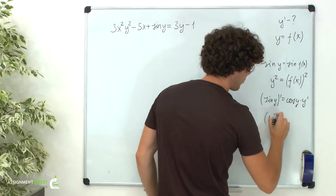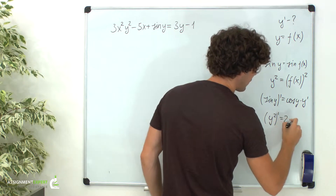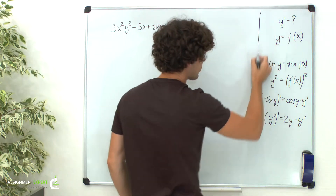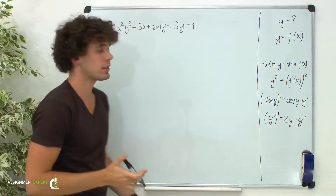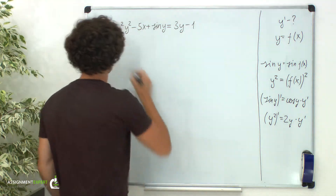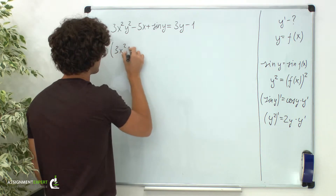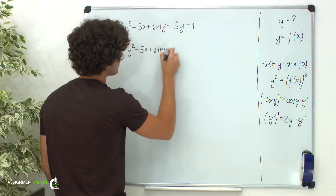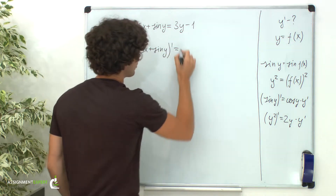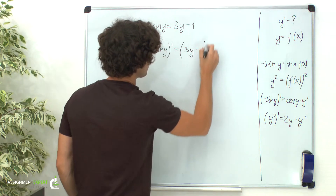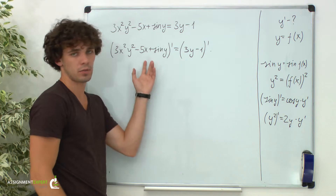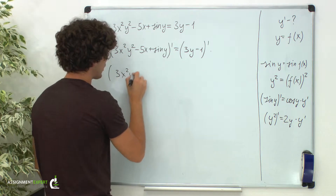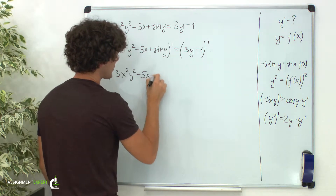And y squared prime is 2y — the derivative of a squared function — times y prime. Now let's differentiate our equality. The derivative of 3x squared times y squared minus 5x plus sine of y equals the derivative of 3y minus 1. Let's begin with the left part: the derivative of 3x squared times y squared minus 5x plus sine of y.